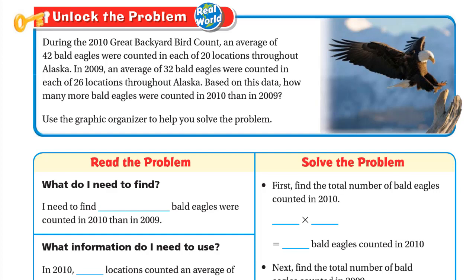During the 2010 Great Backyard Bear Count, an average of 42 bald eagles were counted in each of 20 locations throughout Alaska. In 2009, an average of 32 bald eagles were counted in each of 26 locations throughout Alaska. Based on this data, how many more bald eagles were counted in 2010 than in 2009?